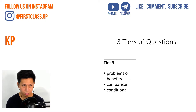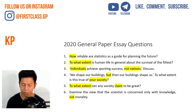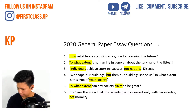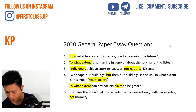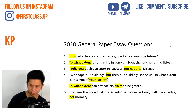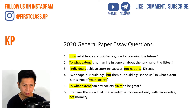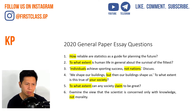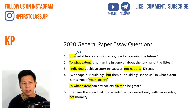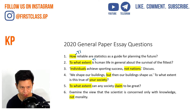Let's use the 2020 General Paper as practice. 'How reliable are statistics as a guide for planning the future?' The word 'how' makes this a tier 1 'how far / to what extent' question. Similarly, 'to what extent is human life in general about the survival of the fittest?' — that's also tier 1.